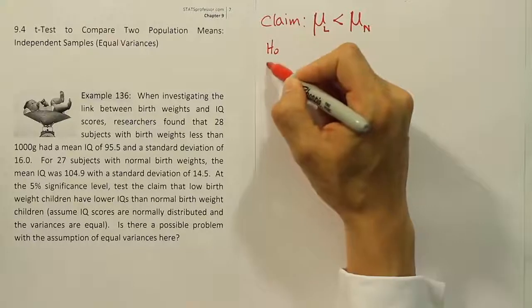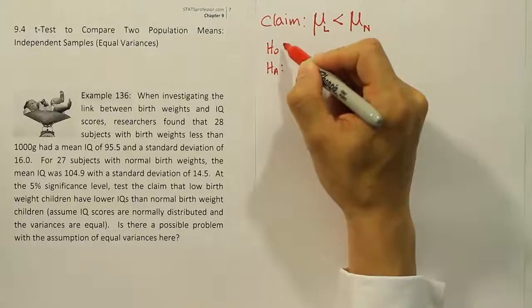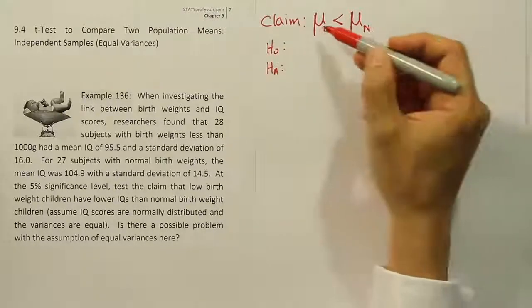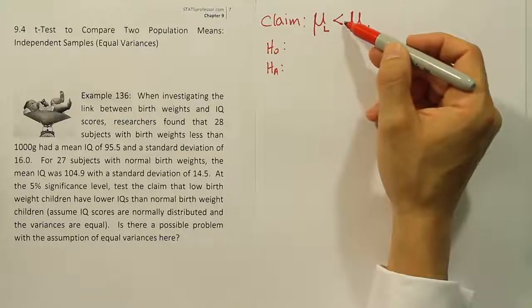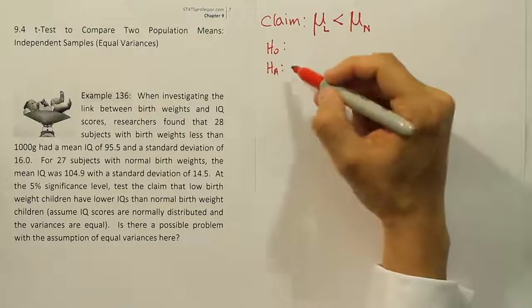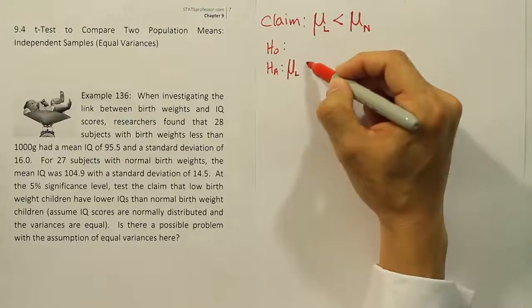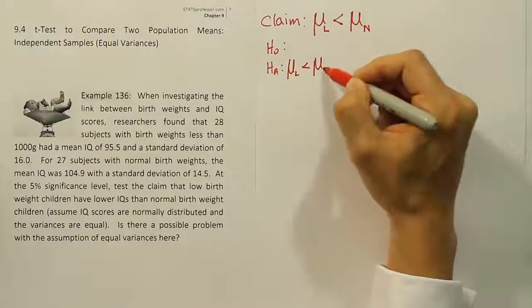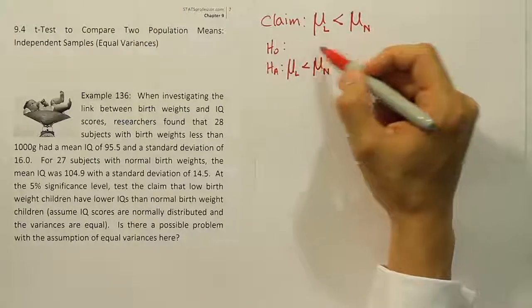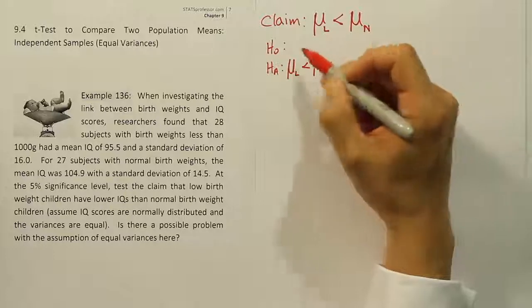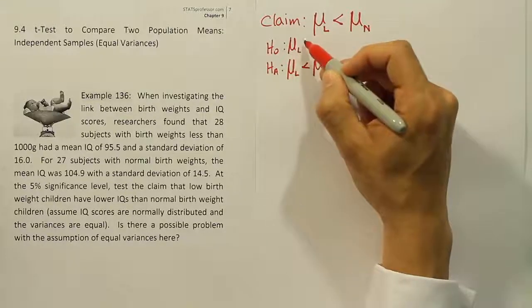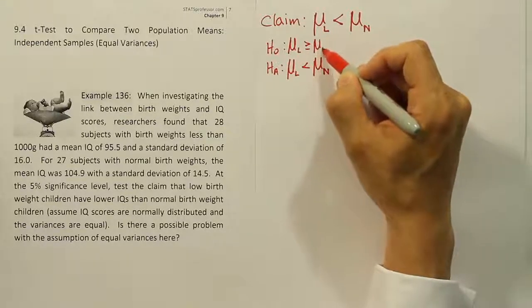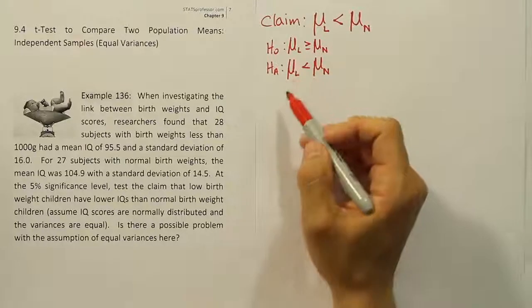Let's go to H0 and HA. To get the alternative hypothesis and the null hypothesis, I'm going to look at the claim and identify its symbol. Its symbol is less than. That means it's the alternative hypothesis. So I'm going to put that there. Now once I've done that, I'm going to look at the null hypothesis and say what's the opposite of less than? Well, that is going to be greater than or equal to. So I have my claim, my H0, my HA.